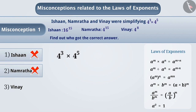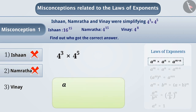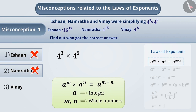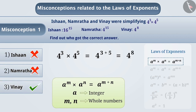Here, we can see that the base of the numbers to be multiplied is the same. When the base is the same, we add the exponents. That is, a to the power of m multiplied by a to the power of n is equal to a to the power of m plus n, where a is an integer and m and n are whole numbers. In this way, 4 to the power of 3 multiplied by 4 to the power of 5 is equal to 4 to the power of 3 plus 5, which is equal to 4 to the power of 8. Hence, the answer given by Vinay is correct. Option 3 is right.